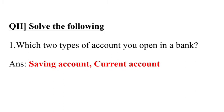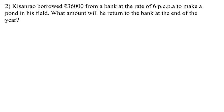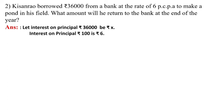The second one: Kisanrao borrowed ₹36,000 from a bank at the rate of 6% per annum to make a pond in his field. What amount will be returned to the bank at the end of the year? Solution is: let interest on principal ₹36,000 be x rupees. So interest on principal ₹100 is ₹6. Why are we taking ₹6? Because the rate of interest is given 6% per annum. It means on ₹100, the person has to give ₹6 interest.